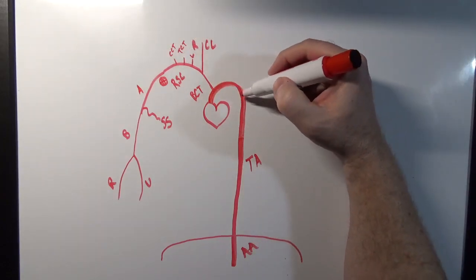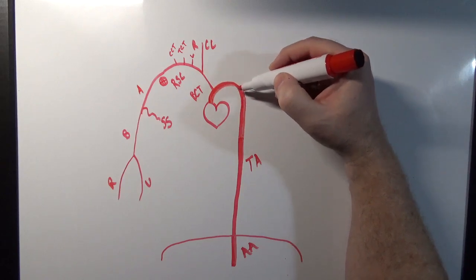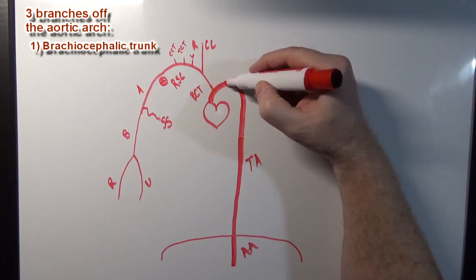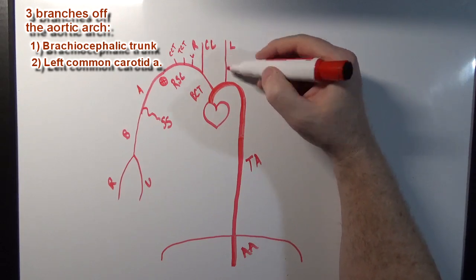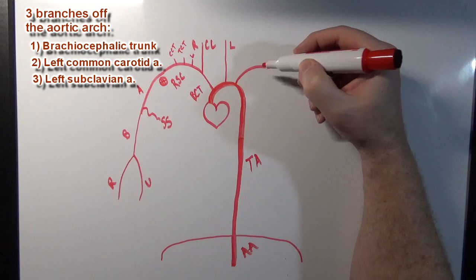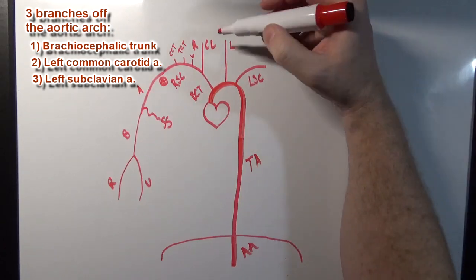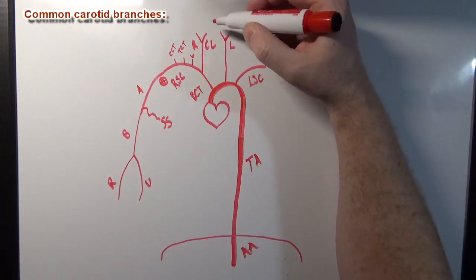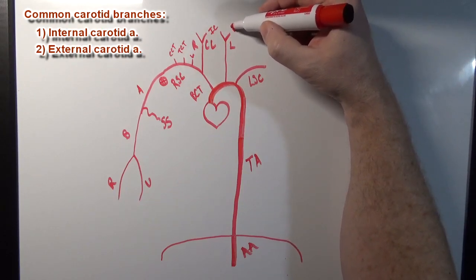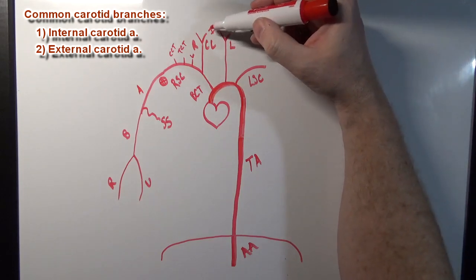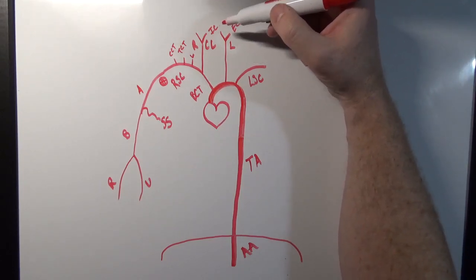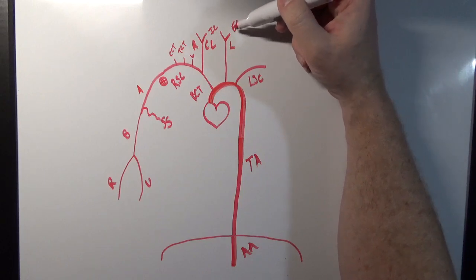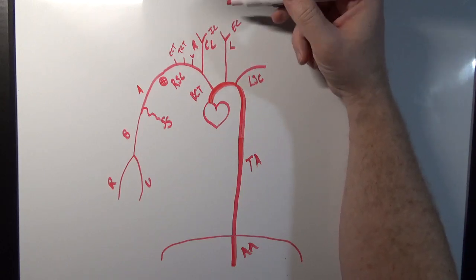Going back to the arch of the aorta, let's talk about the other two branches. Remember we already discussed the brachiocephalic trunk. We're also going to have a left common carotid and a left subclavian. These common carotids will branch into the internal carotids and the external carotids. The internal carotid goes into the skull to supply blood to the brain, along with the vertebral arteries. The external carotids supply blood to the face and head.